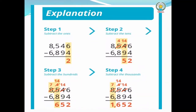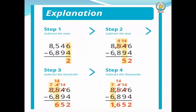Step three — subtract the hundreds place digits. Four minus eight cannot be done because four is smaller than eight, so we borrow one from the thousands place. Eight becomes seven after borrowing, and four becomes fourteen. Fourteen minus eight gives six. Step four — subtract the thousands place digits: seven minus six gives one. So the final answer is one thousand six hundred fifty-four (1654).